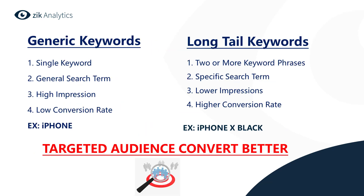So now we have generic keywords. Generic keywords are single keywords — as you can see in our example, the word iPhone. Generic keywords are general search terms, which means buyers are not looking for a specific item; they are just browsing. Generic keywords bring high impressions because a lot of people search for them, but they are not exact, which brings low conversion rates. When someone goes to eBay and types iPhone in the search bar there is a lot of competition, many people are selling this, giving you a lot of impressions but a low conversion rate.